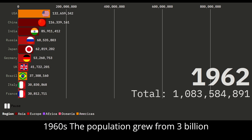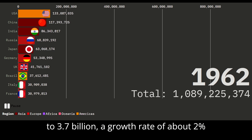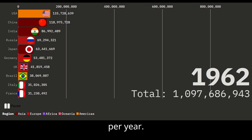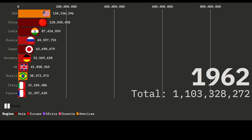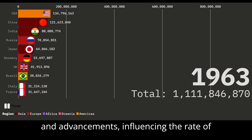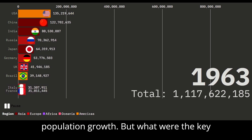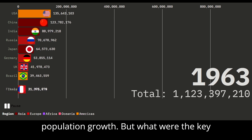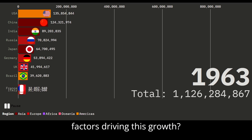In the 1960s, the population grew from 3 billion to 3.7 billion, a growth rate of about 2% per year. Each decade brought its own challenges and advancements, influencing the rate of population growth. But what were the key factors driving this growth?